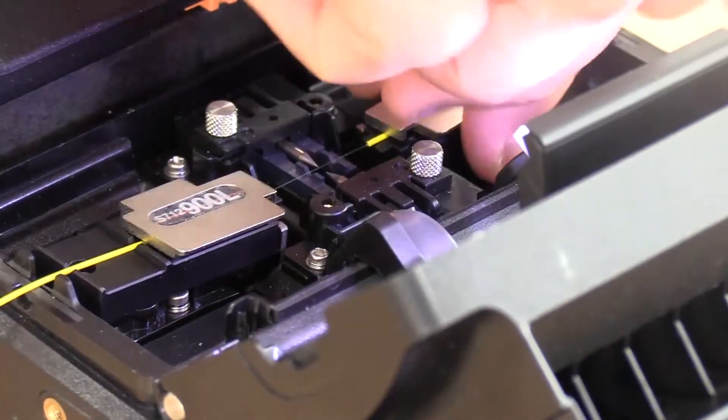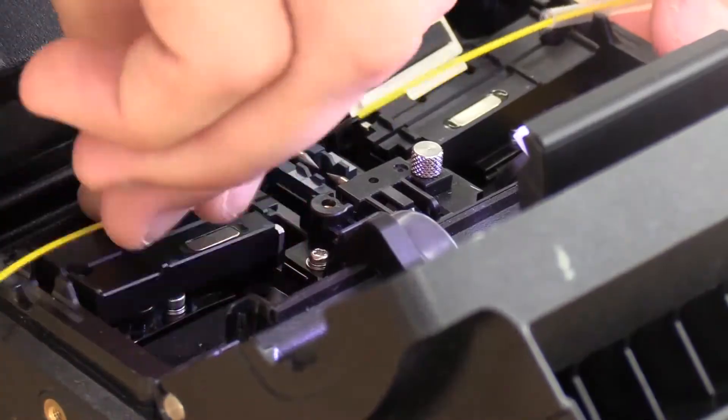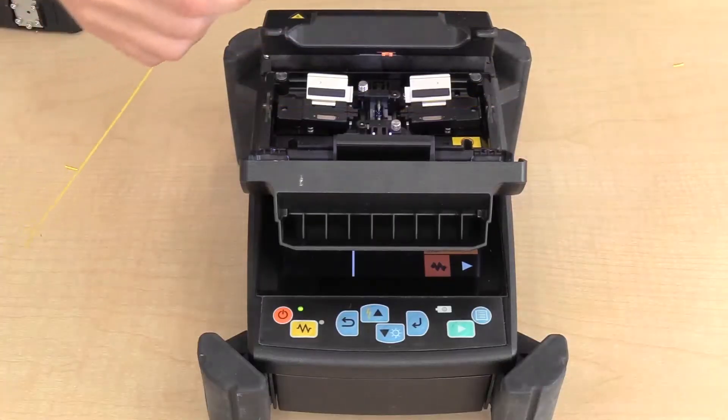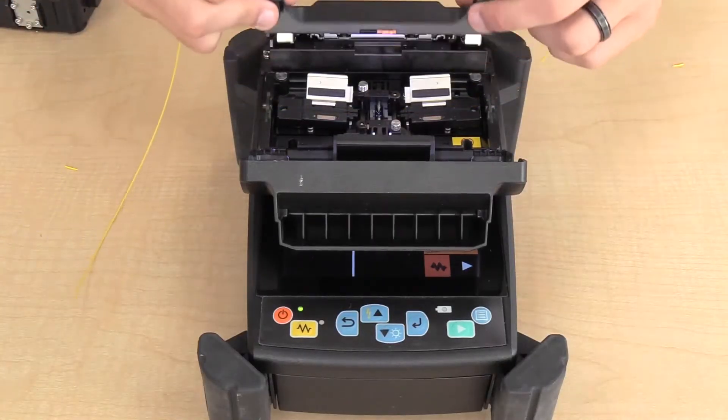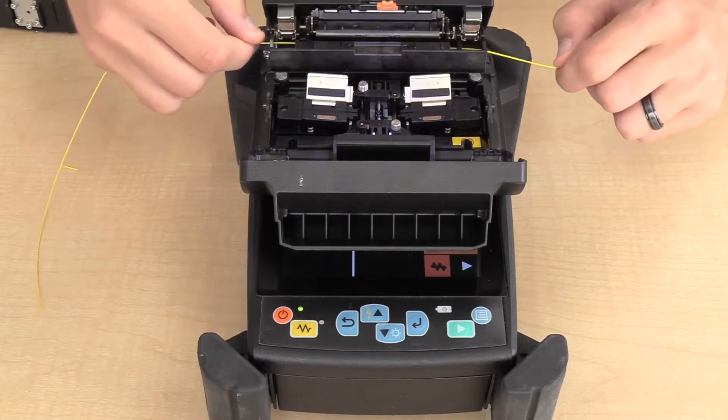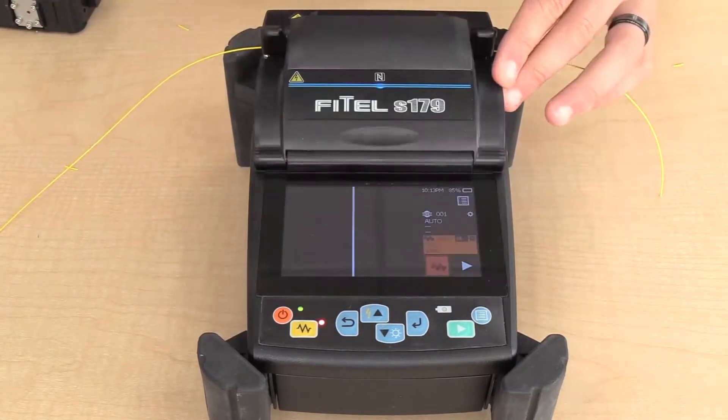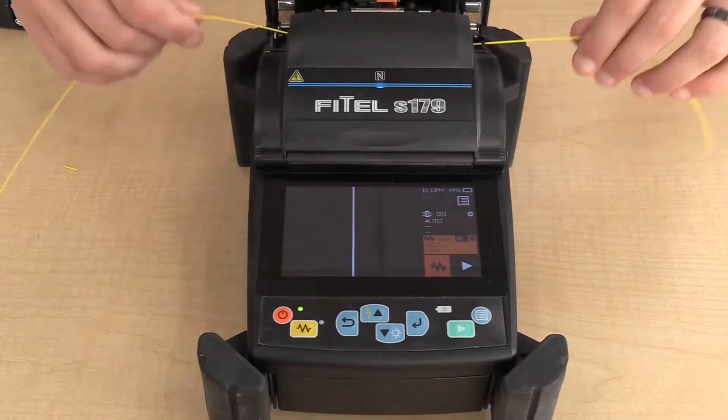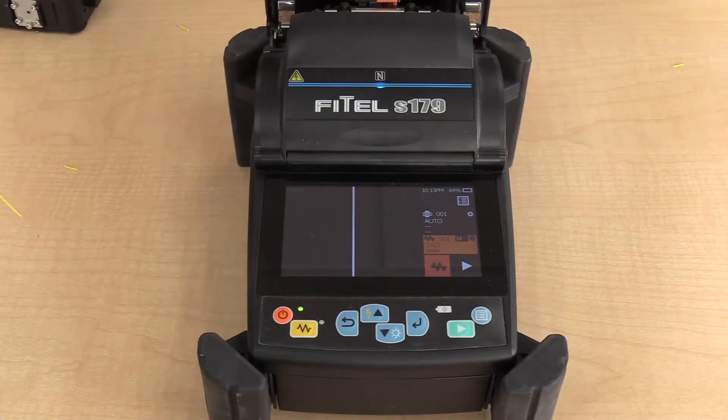A large capacity battery system helps save time by allowing 200 splicing cycles in one charge. The Fattel S179 Fusion Splicer has a 4.3-inch wide LCD screen with touch panels that offer easy and intuitive operation.